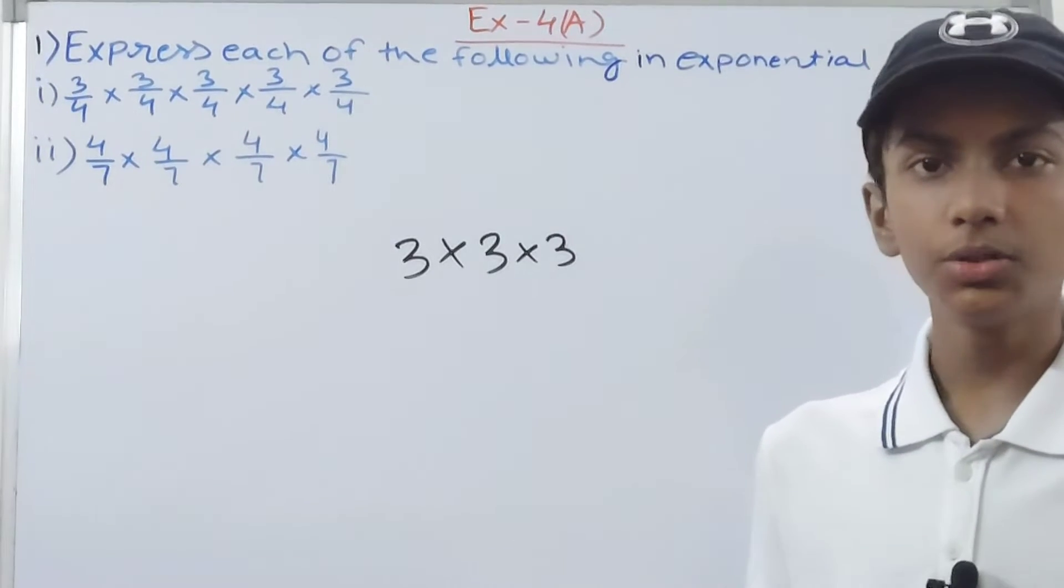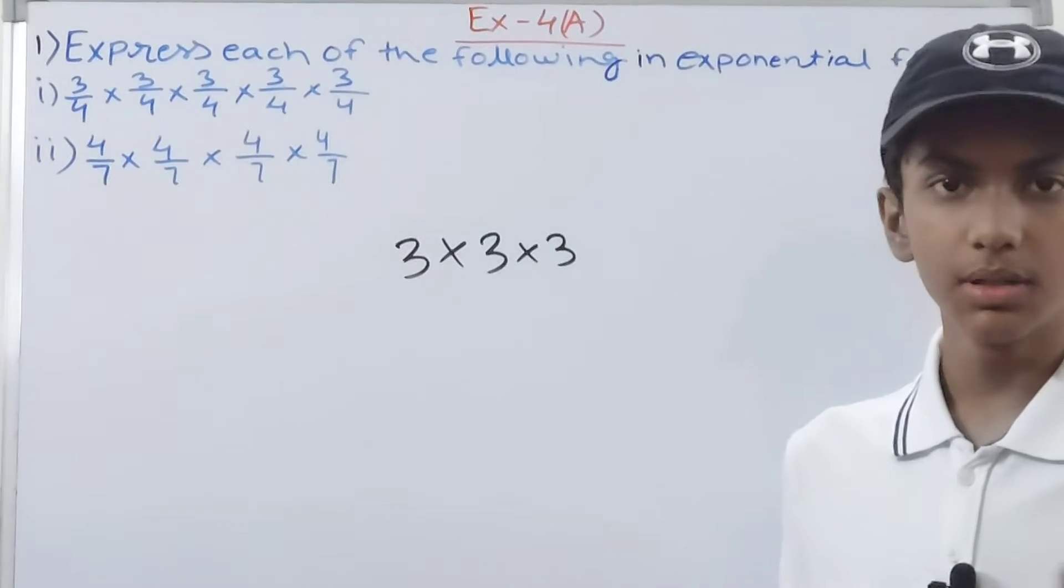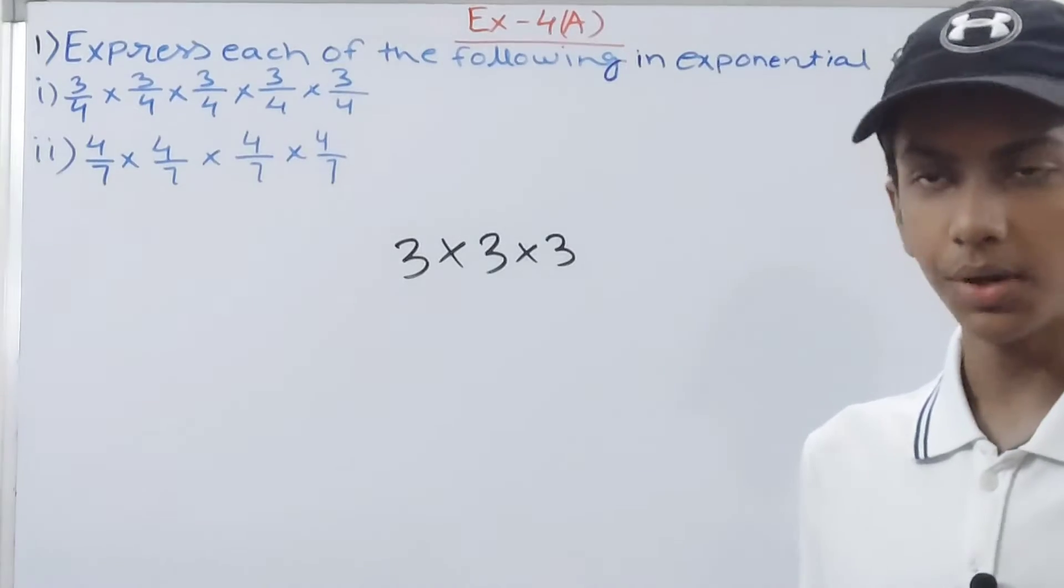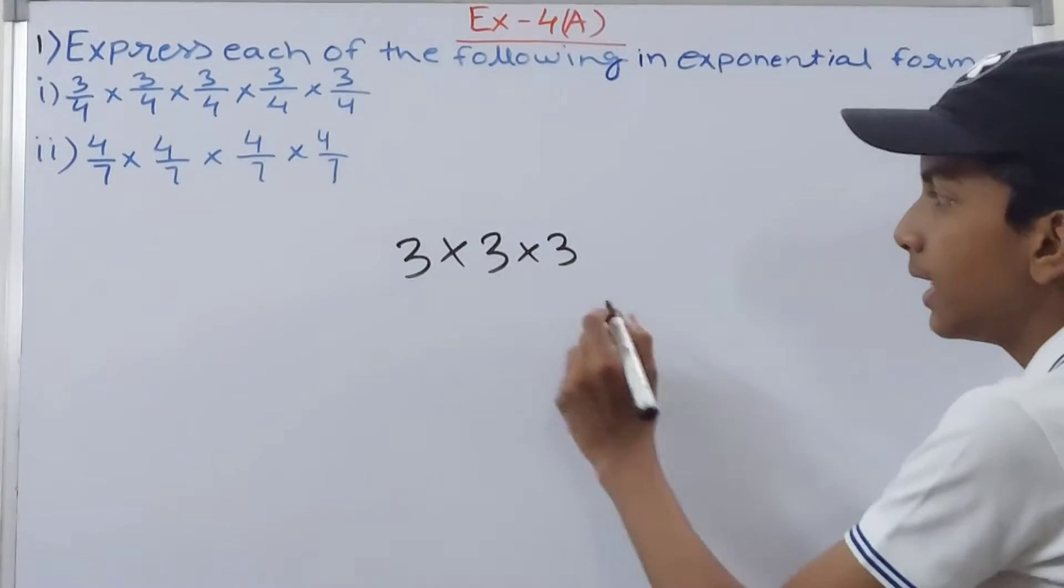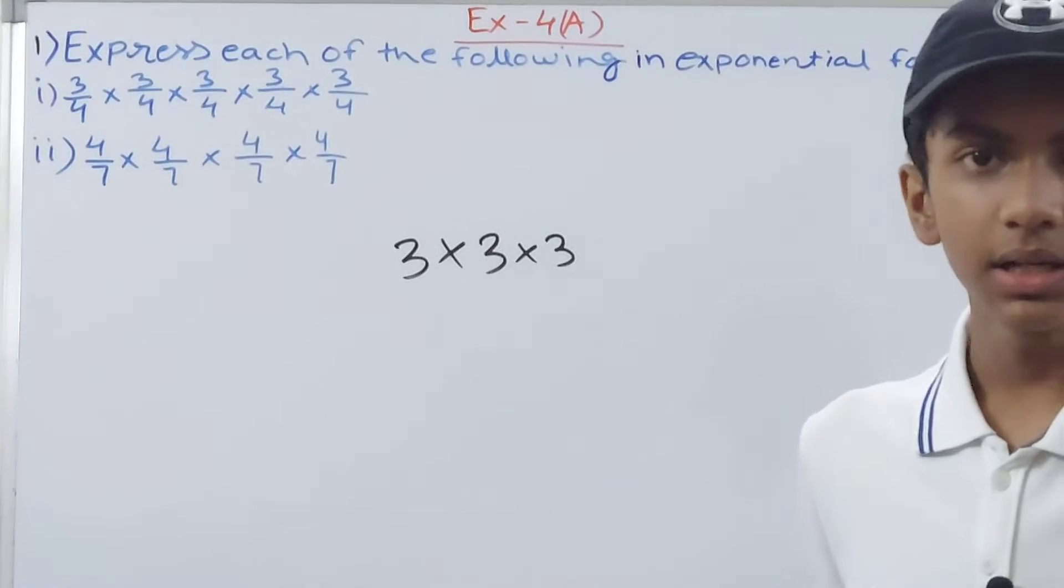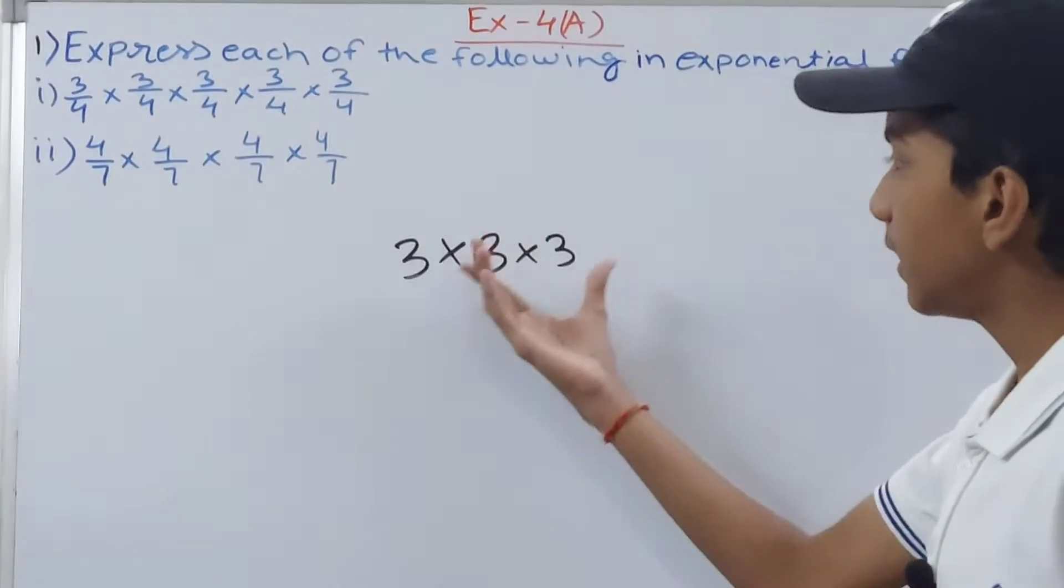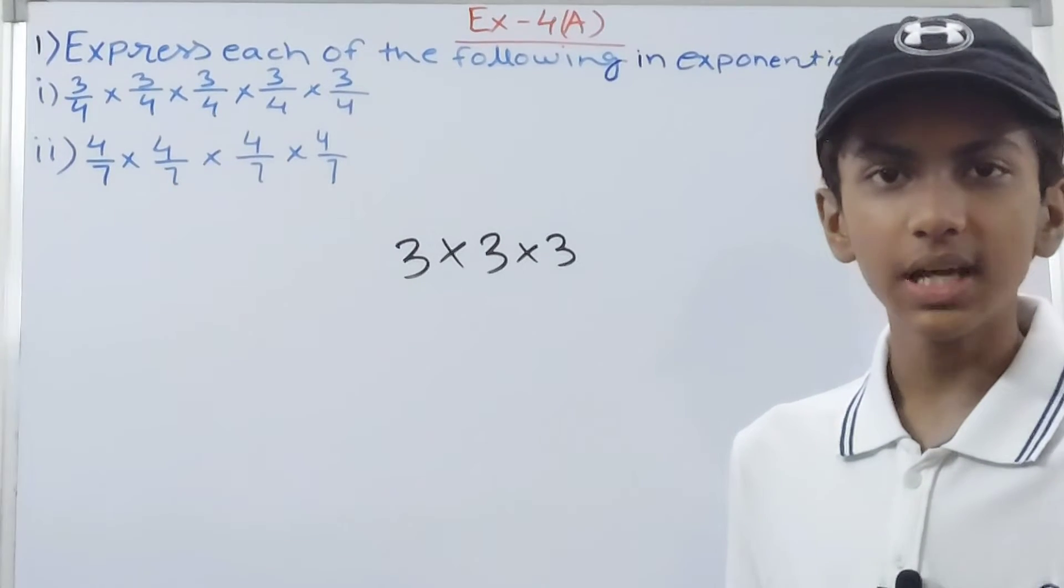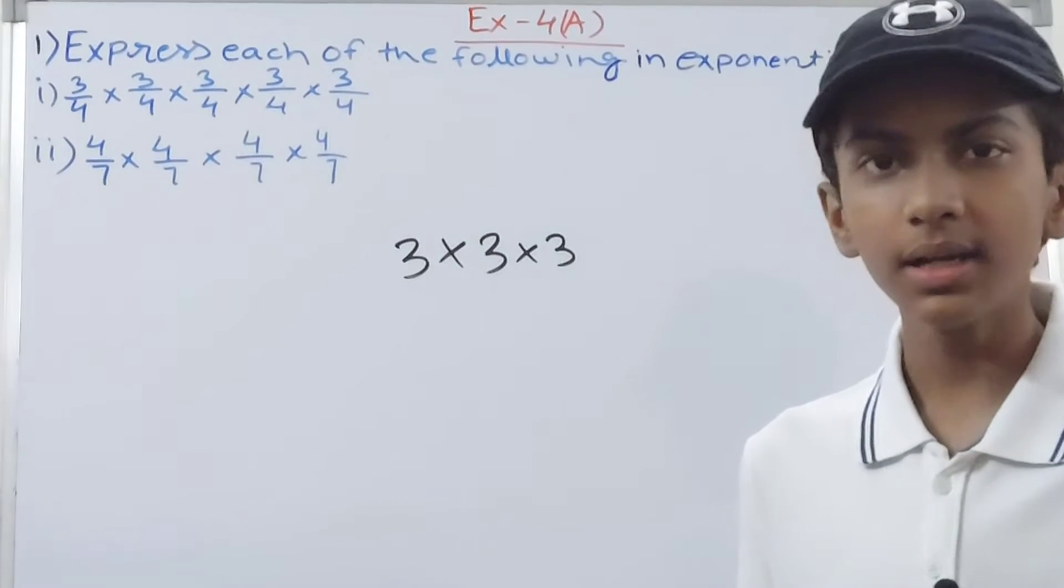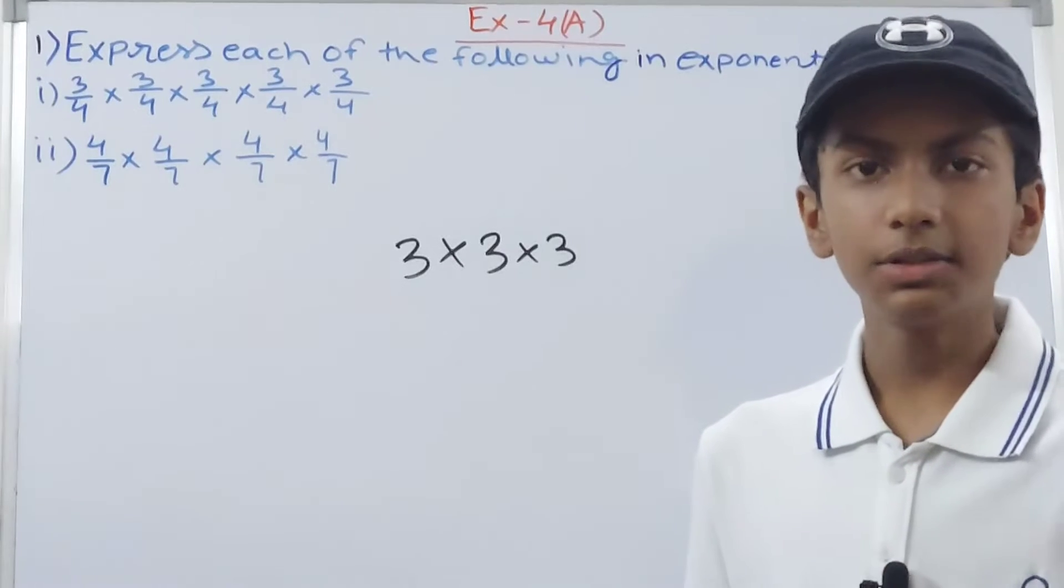This shows that 3 is being multiplied by 3 three times. We can write this instead of writing such a big sentence. If I multiply 3 twenty times or forty times, then what will we do? So for that we use exponents.